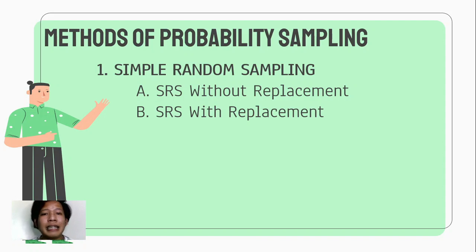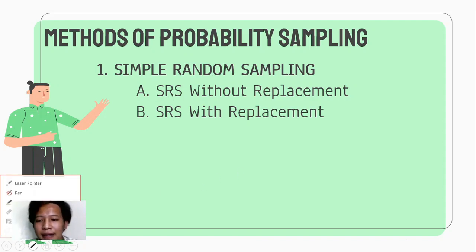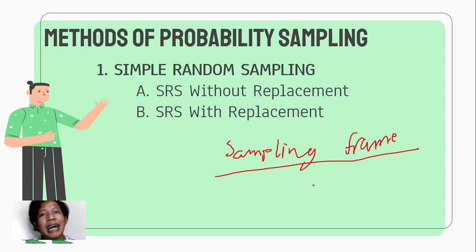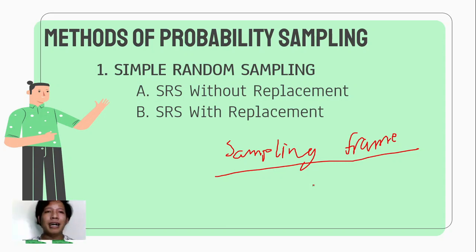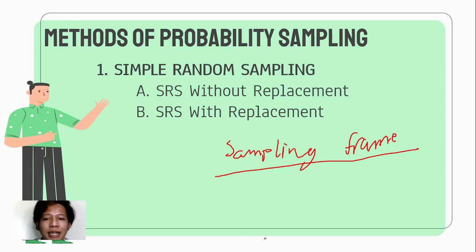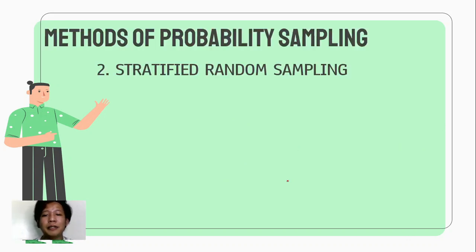Kay random sampling, meron tayong tinatawag na sampling frame. Ano po yung sampling frame? Si sampling frame ay yung list ng lahat ng population mo or ng universe mo. Let's say, ang population ko ay yung mga estudyante ko — yung list ng mga estudyante ko, that is my sampling frame. Lahat ng posibleng nandoon sa population mo — yun yung tinatawag nating sampling frame.